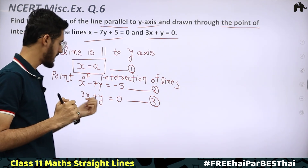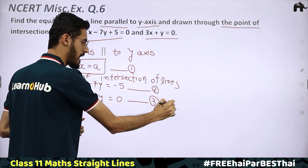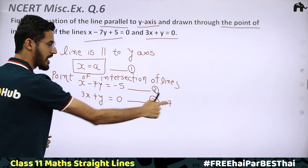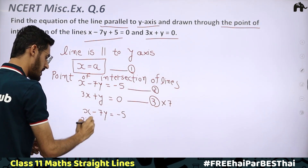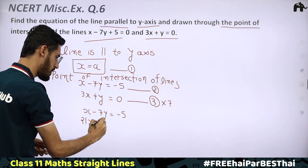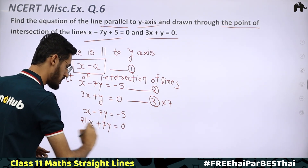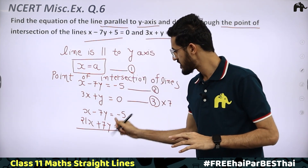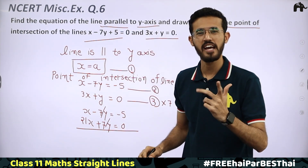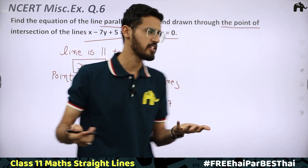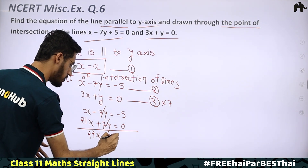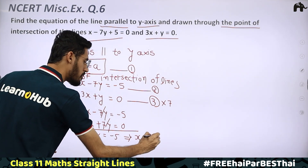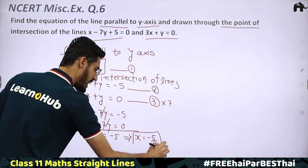To solve, multiply equation 3 by 7: that gives 21x + 7y = 0. Adding to equation 2 (x − 7y = −5): the y terms cancel out, giving 22x = −5, which implies x = −5/22.